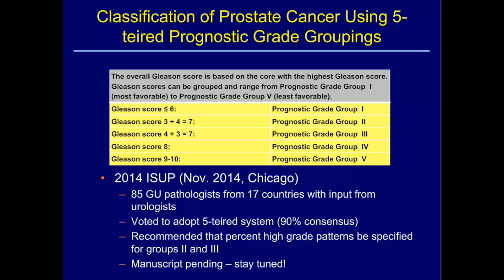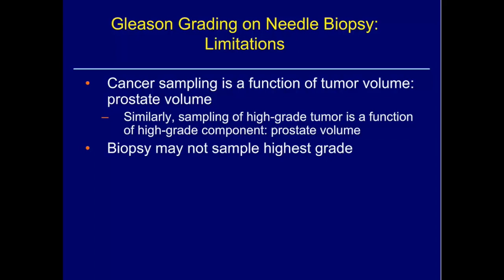We also recommended that in the intermediate groups, because percent of pattern four and five is so important, we actually record the percent of high-grade patterns. This is not out yet — the manuscript is in preparation, stay tuned. What I see happening is we'll start using both Gleason score and a prognostic grade grouping on our reports, and eventually Gleason will fade away, leaving us with a simplistic one-through-five grade group that actually has clear meaning.